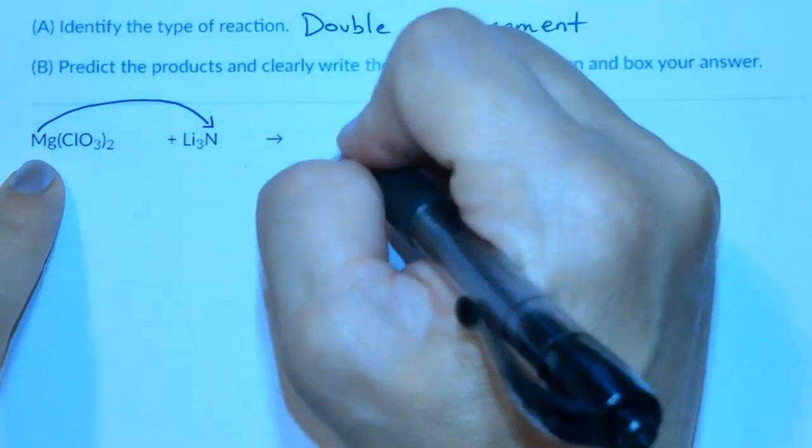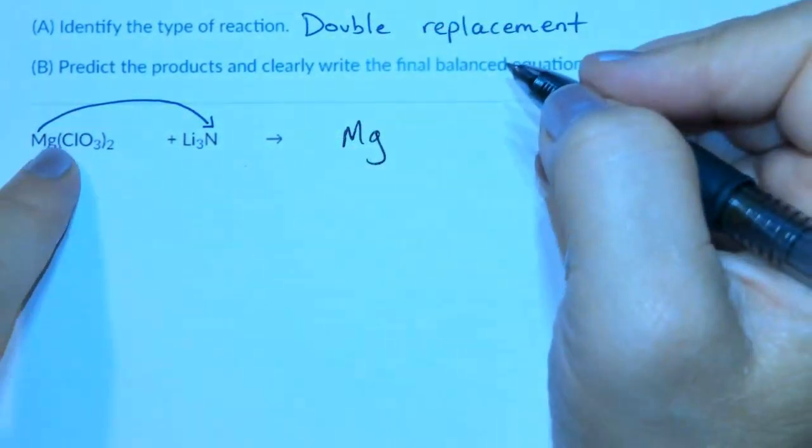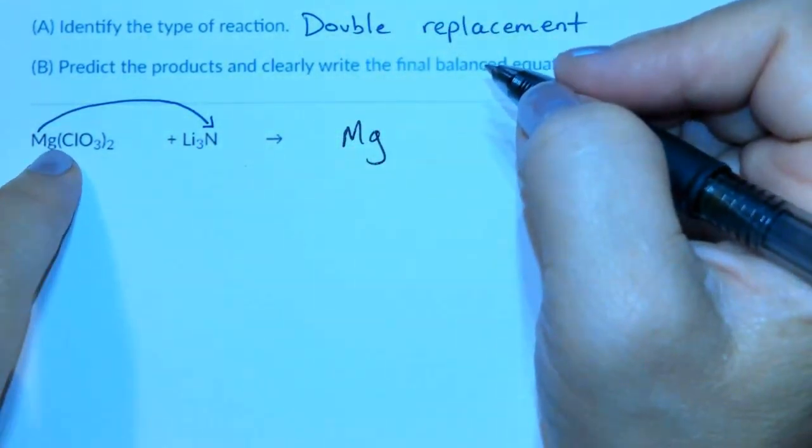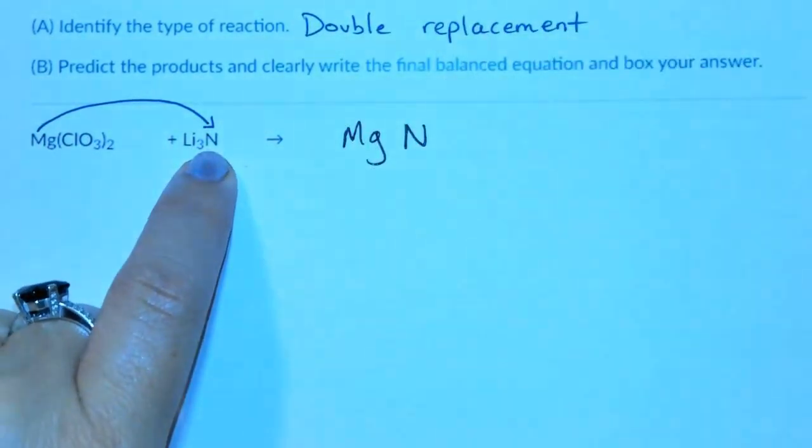So on the right side of the equation, I'm going to write the Mg. I don't carry over subscripts, but there's none to carry over. And then I'm going to put the last, which is N, and again, we would not carry over a subscript.